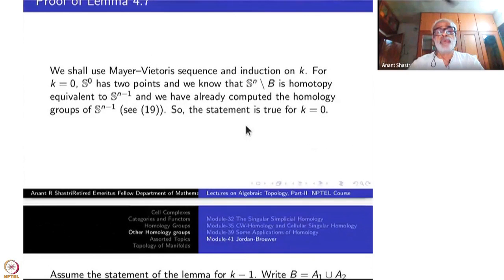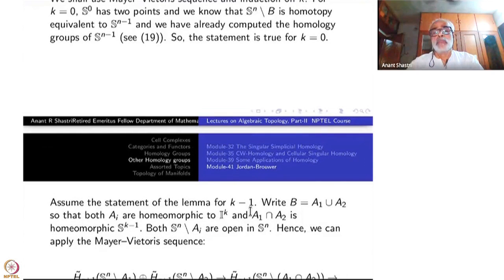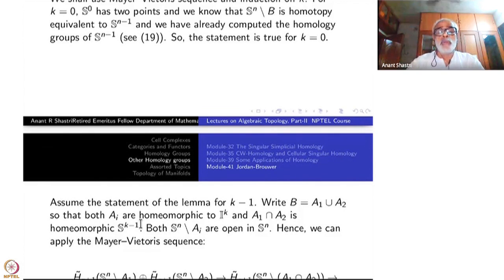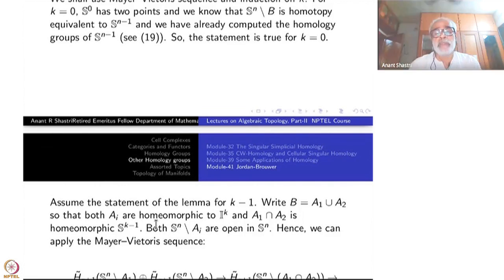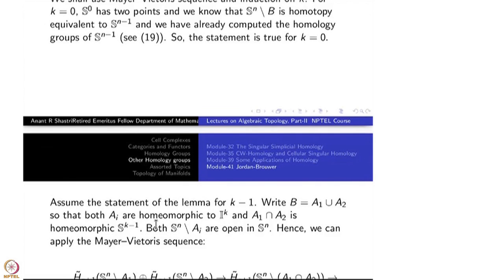Assume the statement is true for K minus 1. Take B homeomorphic to S^K. It can be written as a union of two closed sets A1 and A2, each homeomorphic to I^K — that is, each is a disk. So A1 and A2 are two disks intersecting along the boundary, and their intersection is homeomorphic to S^(K-1). Since we are throwing away closed sets, S^n minus A1 and S^n minus A2 are open sets in S^n, so we can apply the Mayer-Vietoris sequence.